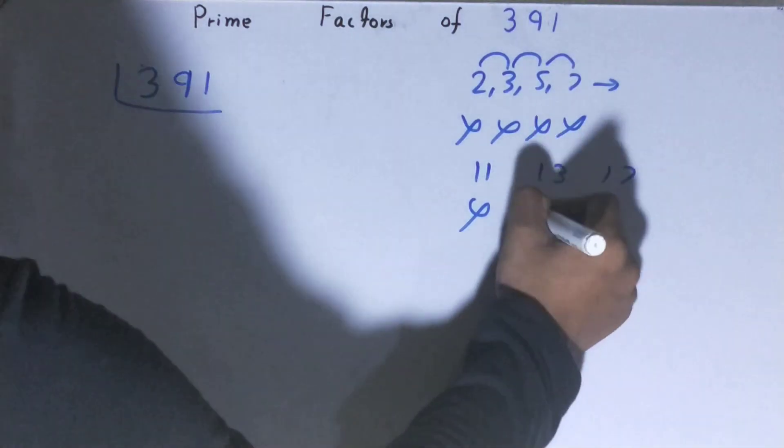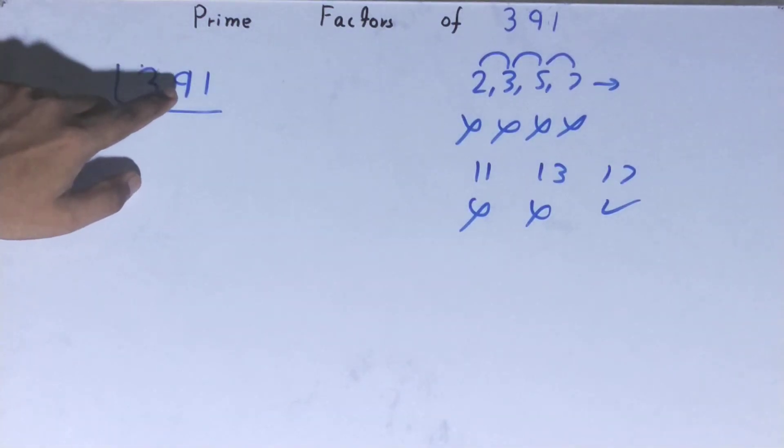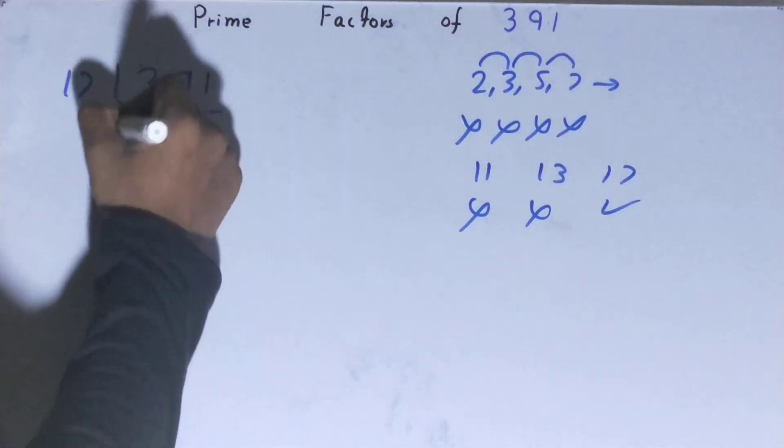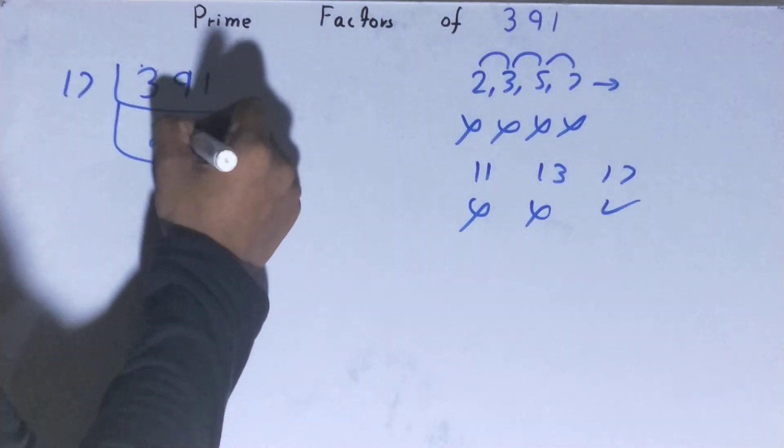We will go to the next lowest prime number, that is 17. 17 times 2 is 34, 51... 30... yes, it is divisible by 17. So divide by 17, we get 23.